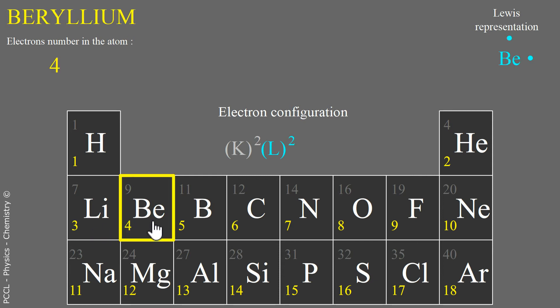Beryllium has four electrons. But Lewis only shows the two independent of the L shell. Each one can participate in a bond. They are valence electrons.